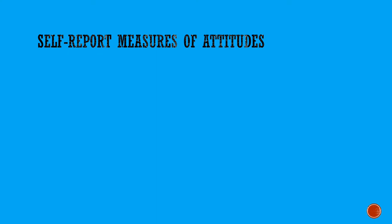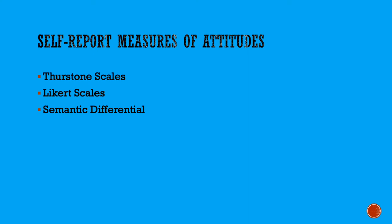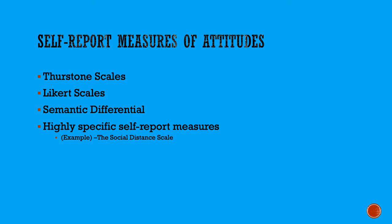The first three types I'm going to talk about — Thurstone scales, Likert scales, and the semantic differential — are general ways of designing a questionnaire to measure attitudes, and they can be used to measure attitudes about just about anything. After that, I'll describe some different types of attitude measures that exist only to measure attitudes about a specific thing. Then I will talk about the social distance scale as an example of a self-report measure that can only be used for one purpose.